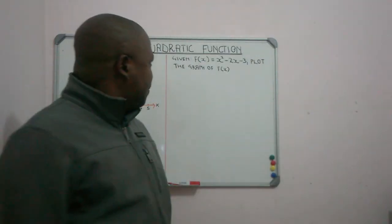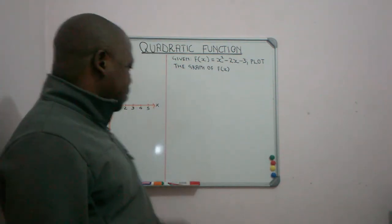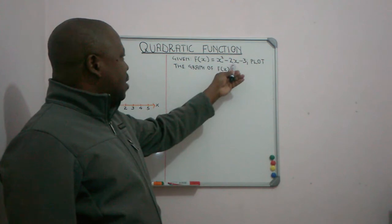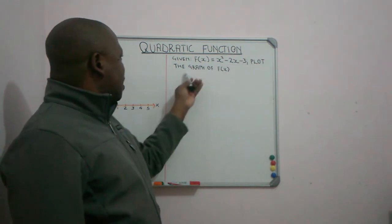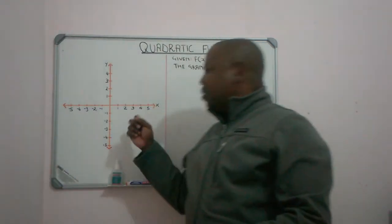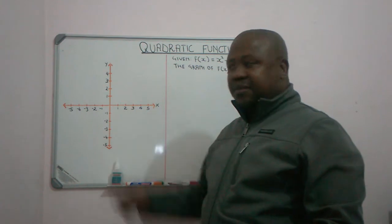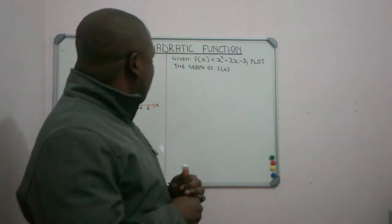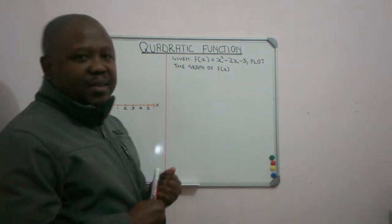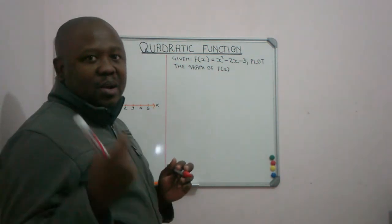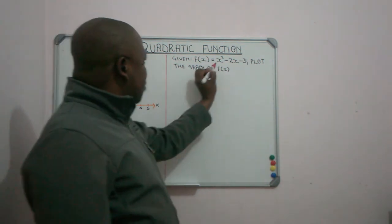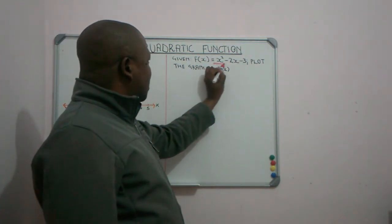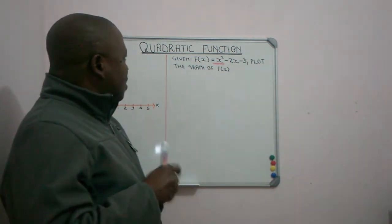In our topic today, we have this information given: f(x) is equal to x squared minus 2x minus 3, plus the graph of f(x). Here is our condition to plot the graph. Before we can even start plotting the graph from our equation, we can already establish a few things. As you can check here, we have x squared, and it is positive.